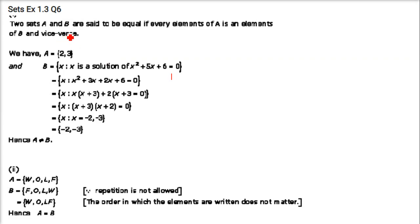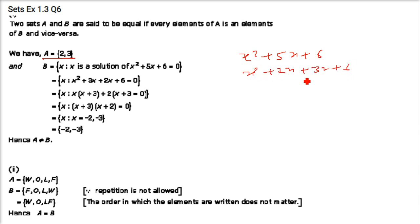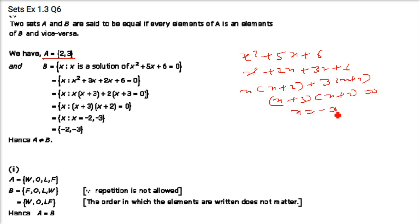Next: are these pairs equal? A = {2, 3}. B: solving x² + 5x + 6 = 0 → (x+3)(x+2) = 0, so x = −3, −2, giving B = {−2, −3}. The elements are different, so A and B are not equal — though they are equivalent since both have 2 elements.